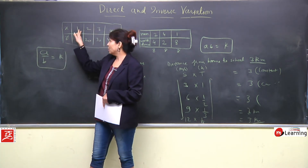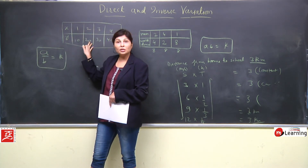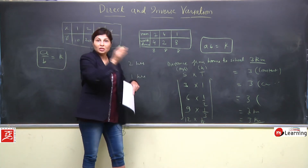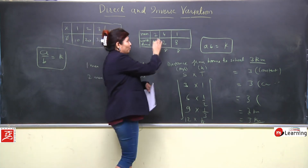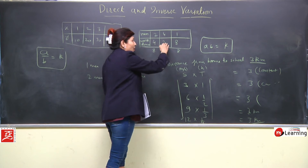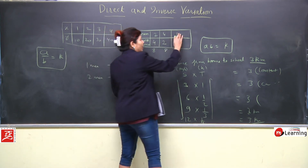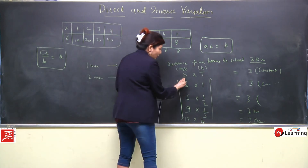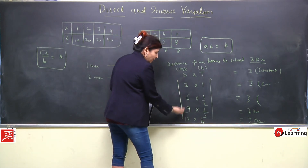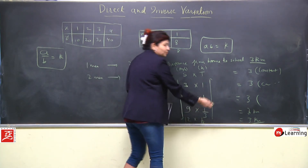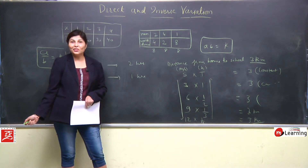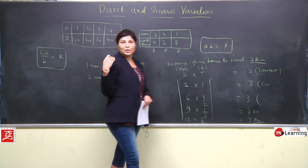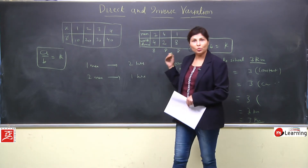Direct variation mein: one pen ki cost itni, toh 2 ki cost increase ho gayi, 3 ki increase, 4 ki increase. But inverse mein just opposite ho gaya — men increase huye toh time kam laga; men decrease huye toh time zyada laga. Speed increase ki toh time kam ho gaya, decrease ho gaya. These are the main differences between direct and inverse variation.